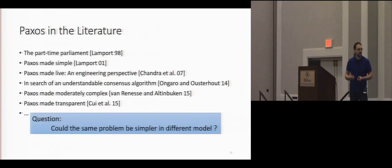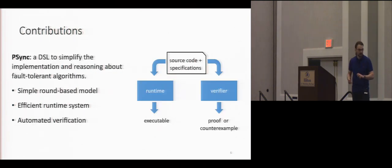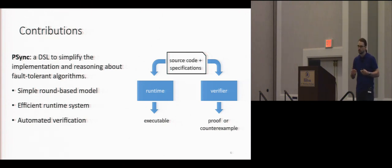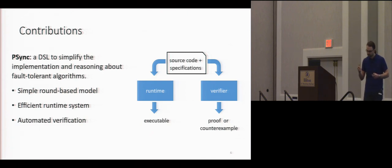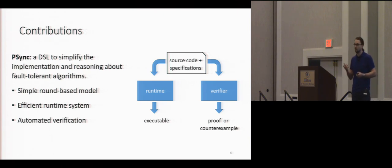So our question is: maybe this problem could be much simpler if we look at those systems and implement them in a different way. We present a domain-specific language called PSync, and the goal is to make it simple. We are not aiming at replacing Paxos, but if you want to implement Paxos, we are going to get you part of the way there and simplify your life. So we want a simple, concise programming model that is easy and natural to express these algorithms. It has to be efficiently executable, and we want the language designed in a way that we can apply automated verification on the algorithm itself.